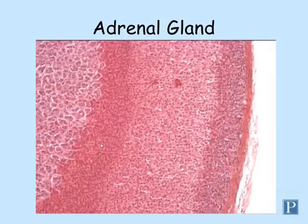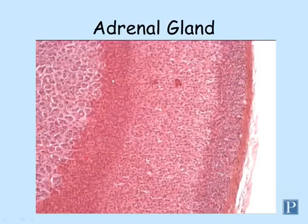Most androgens in males come from the testes, but some come from the zona reticularis layer in the adrenal cortex. Females also produce low levels of androgens from this layer of the adrenal cortex as well.